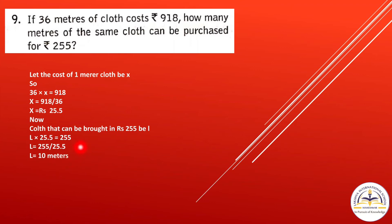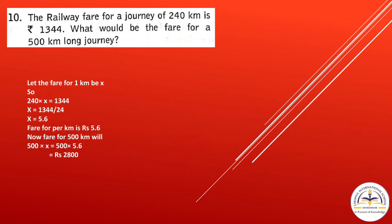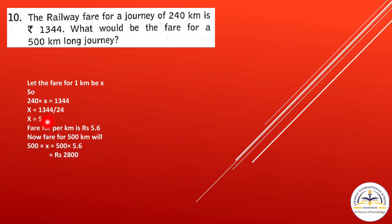Question 10: The railway fare for 240 kilometers is rupees 1344. What would be the fare for 500 kilometers? Let the fare per kilometer be x. So 240 times x equals 1344, giving x equals 1344 divided by 240 equals 5.6 rupees per kilometer. For 500 kilometers: 500 times 5.6 equals rupees 2800.